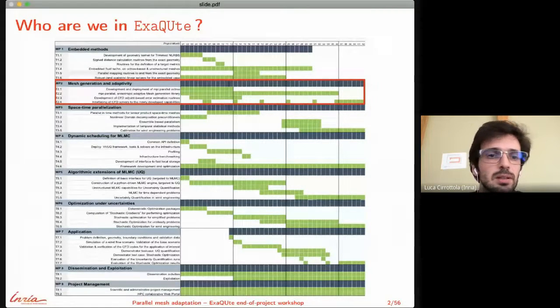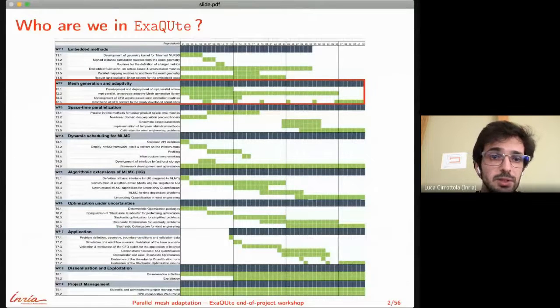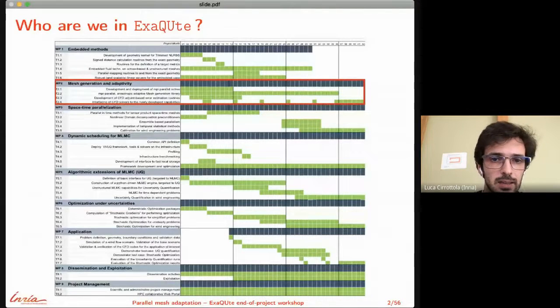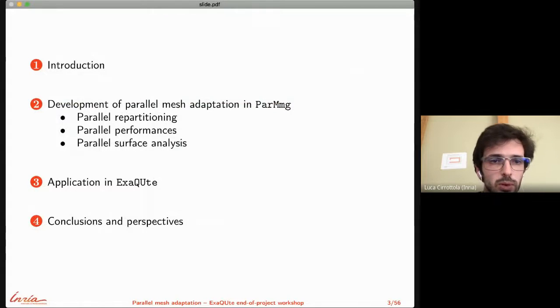In ExaQUte we were responsible for the work package about mesh generation and adaptivity. I will present the work done for the mesh adaptation task inside the Inria team. The presentation will give context about why we need parallel adaptation, then go into details of what has been done for ExaQUte, the repartitioning schemes, optimization of parallel performance, and handling of adaptation on parallel surfaces.